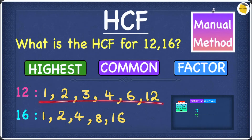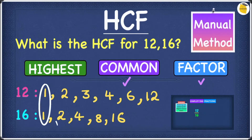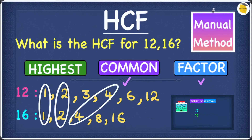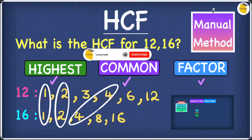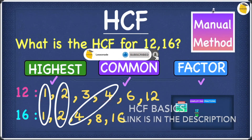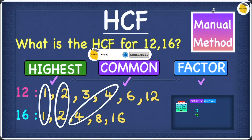So these are the factors for both 12 and 16. Now we've found the factors, we're going to move on to the common factors. We're going to circle the ones that are in common: 1 is in common between both of them, 2 is in common, and 4 is also in common. The highest number out of 1, 2, and 4 is obviously 4. So our HCF for this question is 4.